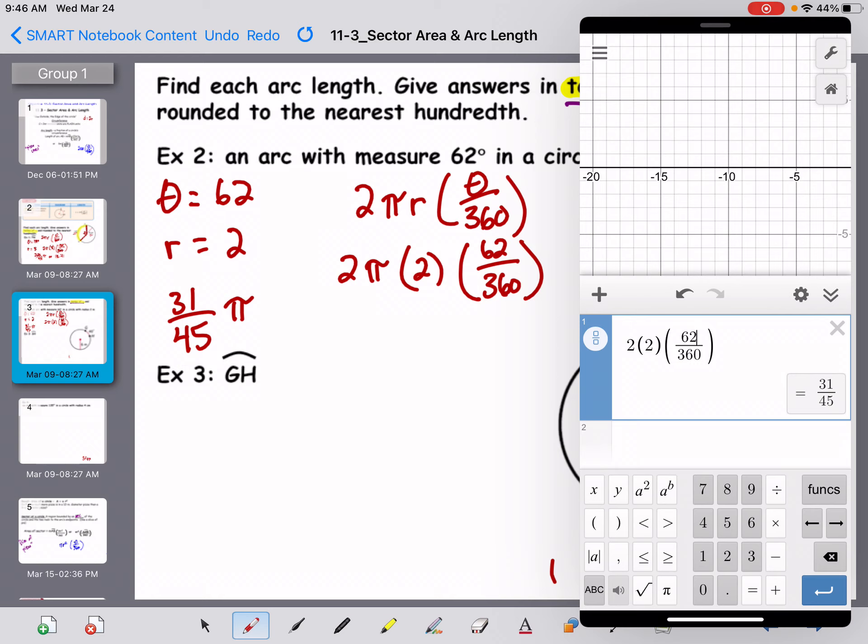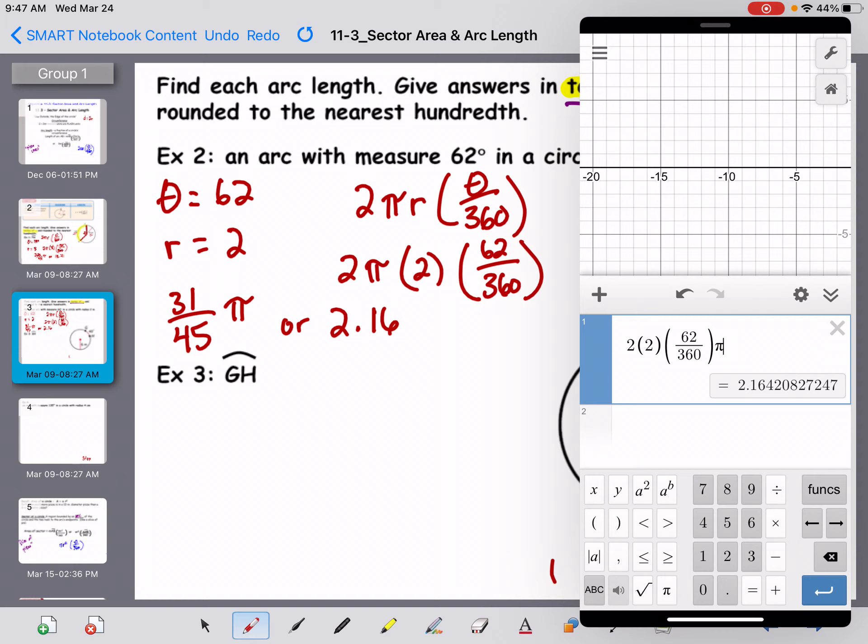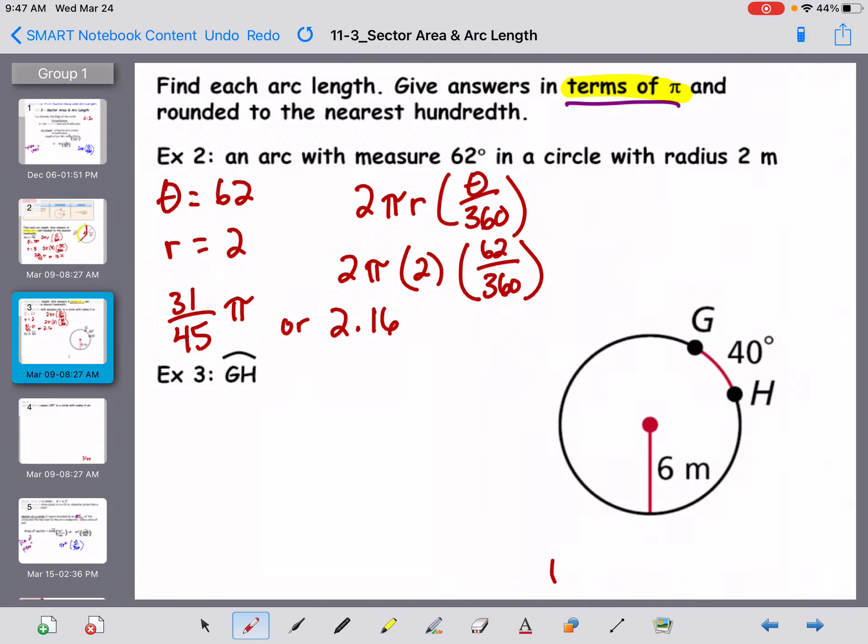Now I also want to round, include it, so I'm going to put the pi back in, and I'm going to get a decimal, or 2.16.